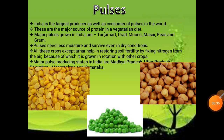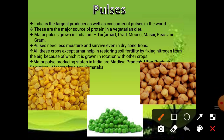Next are pulses. Pulses are very important because they are highly nutritious and a great source of protein. India is the largest producer as well as consumer of pulses in the entire world. These are the major source of protein in a vegetarian diet. Major pulses grown in India are thuwar, arhar, urad, moong, masoor, peas and gram.